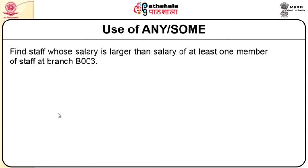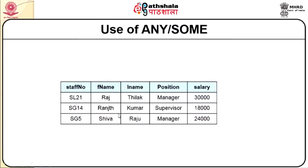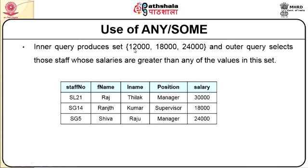Using ANY or SOME: find staff whose salary is greater than the salary of at least one member of staff at branch B003. SELECT staff number, first name, last name, position, salary FROM staff WHERE salary greater than SOME (SELECT salary FROM staff WHERE branch number = 'B003'). The inner query produces a set of values such as 12,000, 18,000, and 24,000, and the outer SELECT lists those staff whose salary is greater than any of the values in that set.